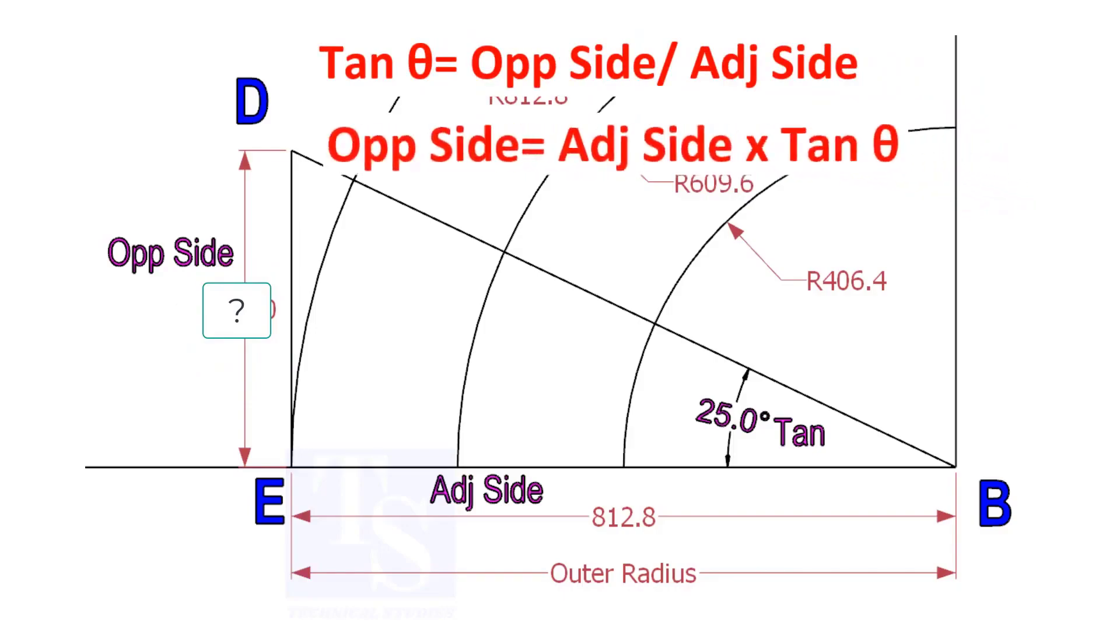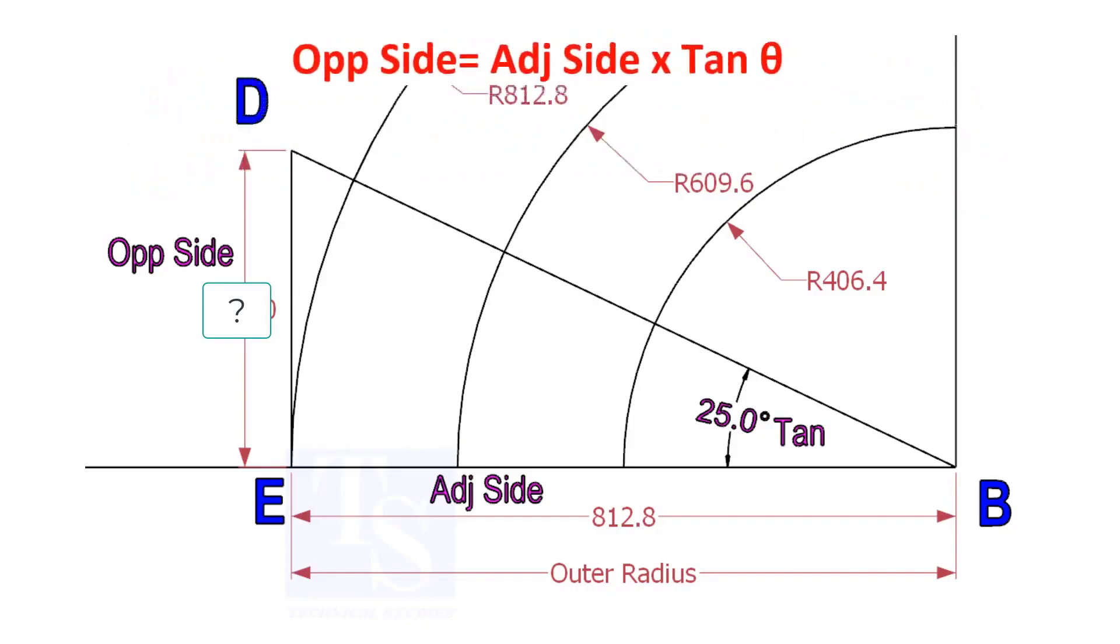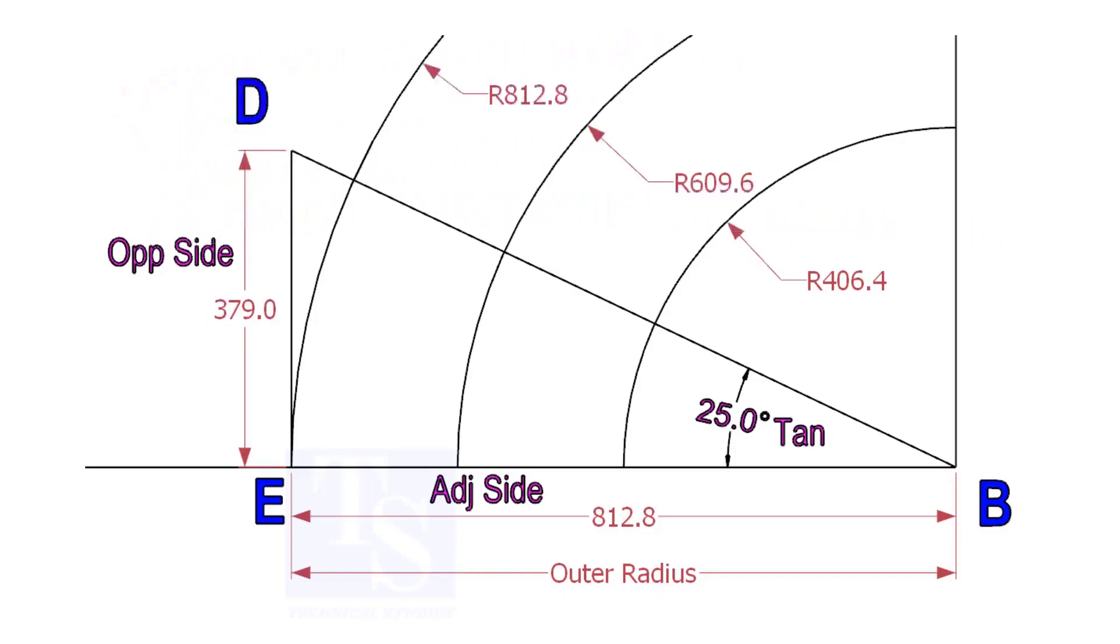Opposite side equals adjacent side multiplied by tan theta. 812.8 into tan 25 equals 379 millimeters. Draw the line ED vertically and the slant line DB. I hope now you will be able to draw a line in any degree.